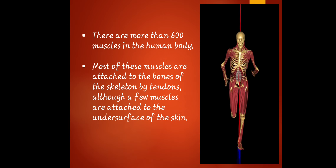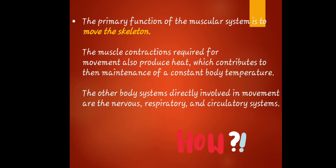The primary function of the muscular system is to move the skeleton. Muscle contraction required for movement also produces heat, which contributes to the maintenance of a constant body temperature. The other body systems directly involved in movement are the nervous, respiratory, and circulatory systems. Muscles connect to these systems because movement involves all parts of the body.